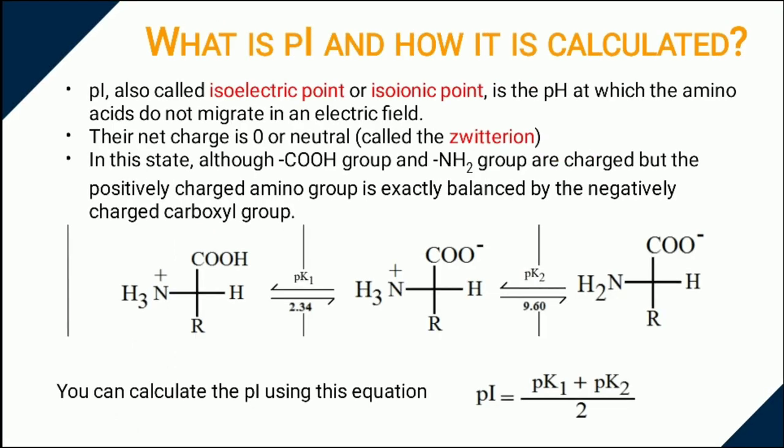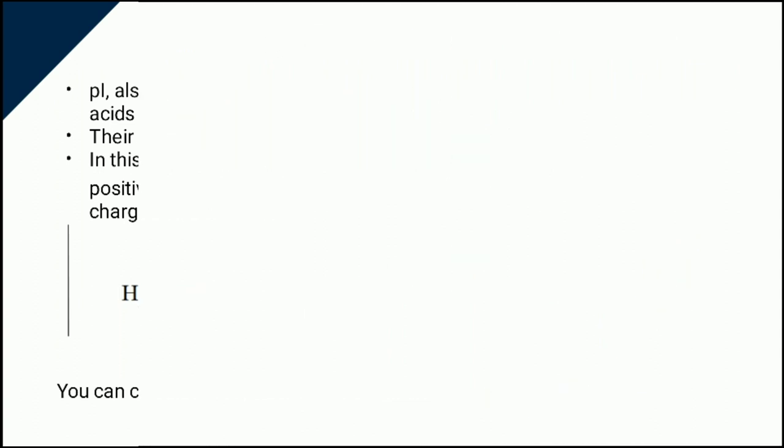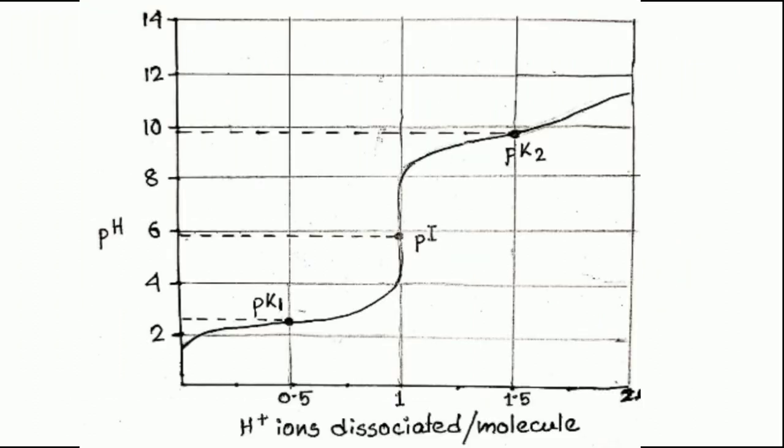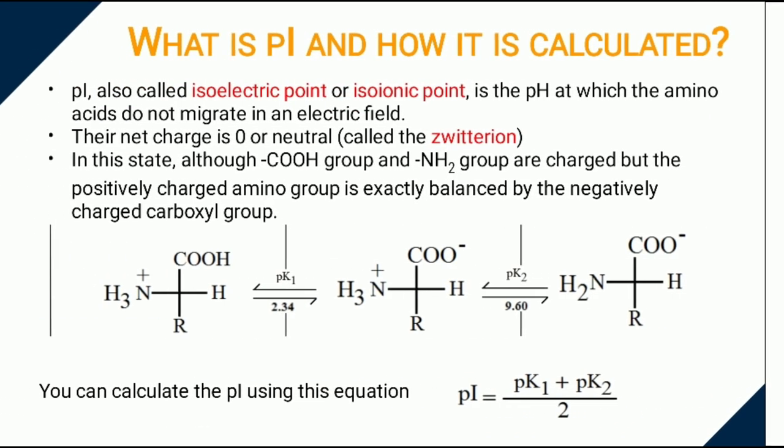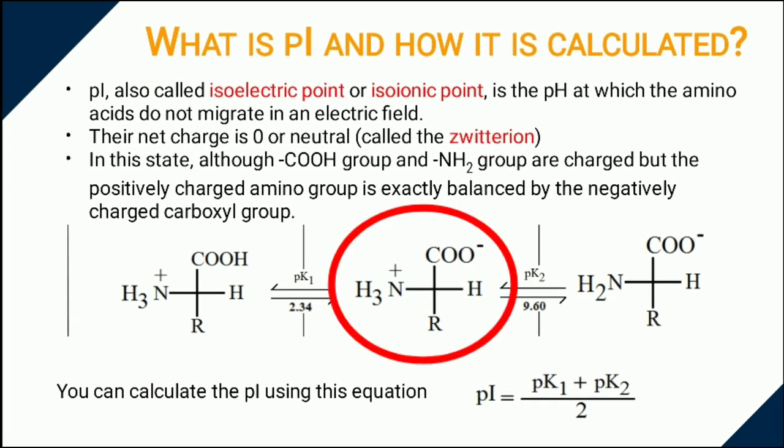At basic pH, alpha amino group start dissociating its proton. So the molecule becomes negatively charged. When 50% amino acid residues loses protons, it's called pK2. In between, amino acid possesses both positive and negative charge. It's called PI.